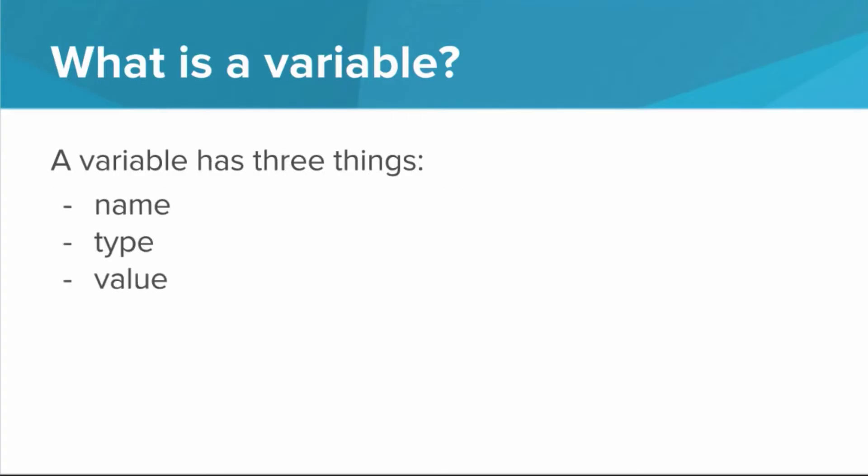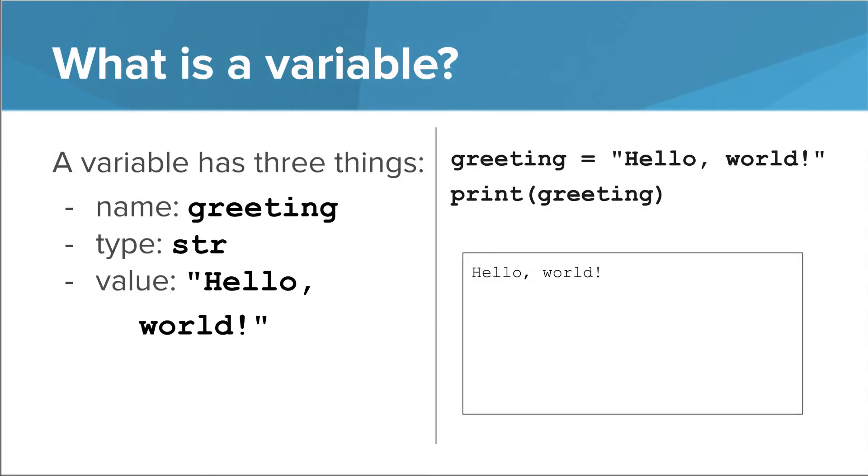More specifically, a variable has three things: a name, a type, and a value. So let's look at the two variables that we just saw and spell out each of these three characteristics. In the case of the variable greeting, the name of the variable is greeting, the type of the variable is str, which I'll explain in a second, and the value is hello world in quotes.